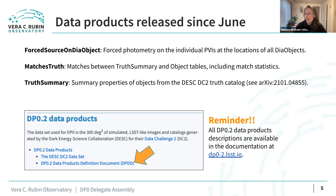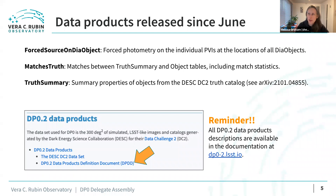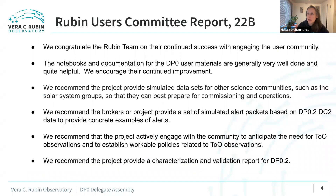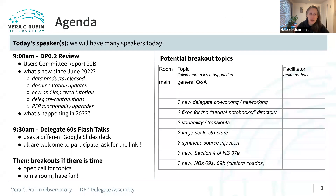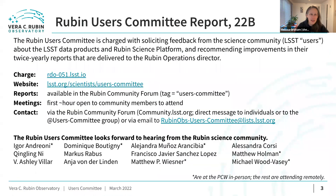You can use the ForcedSourceOnDiaObject table in addition to the DIA source and DIA objects catalog. The other two catalogs that came out after June were the MatchesTruth and TruthSummary tables, which contain the truth data and their matches to the object catalog. You can find descriptions of all of these in the DP0.2 data products definitions document. Matt has now joined, so I'm going to back up and invite him to speak to his slides.